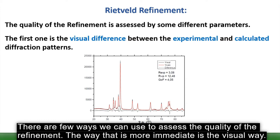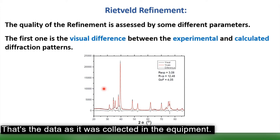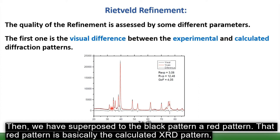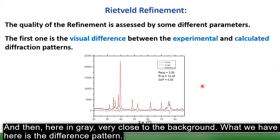There are a few ways to assess the quality of the refinement. The most immediate is the visual method. In this figure, we have a Rietveld refinement plot: the black pattern is the experimental X-ray diffraction data as collected by the instrument, and superposed on it is a red pattern, which is the calculated X-ray diffraction pattern generated by the Rietveld refinement steps.